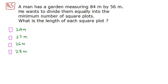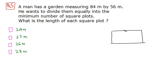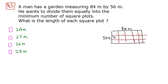The final question: a man has a garden measuring 84 meters by 56 meters. He wants to divide it into the minimum number of square plots. What should be the length of each square plot? So the garden is 84 meters long and 56 meters wide, and the plots must be square with equal side lengths.